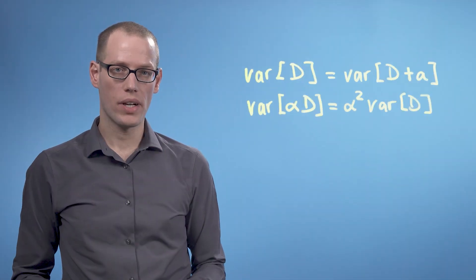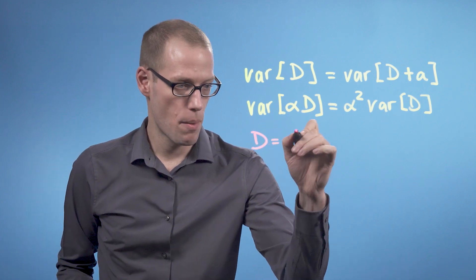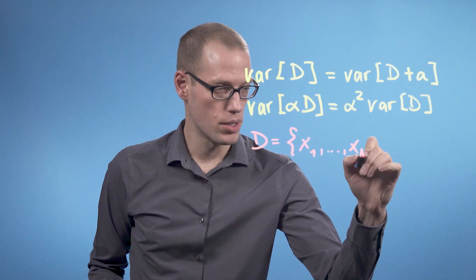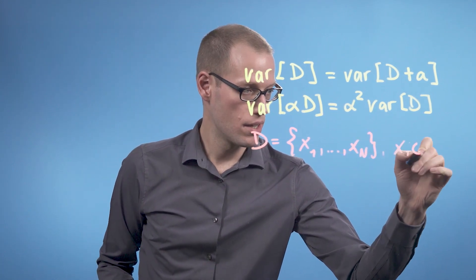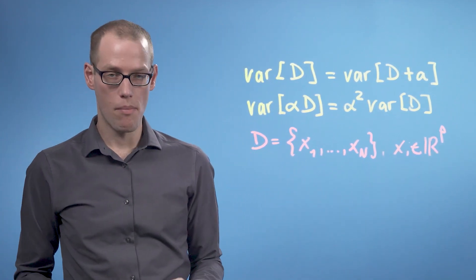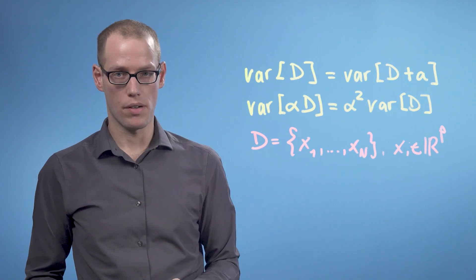Now let's have a look at higher dimensional problems. Assume we have a data set D, which is a collection of data points x1 to xn, and the xi live in R^p. Remember, the variance of this data set is given by a covariance matrix.